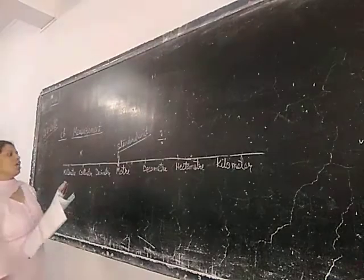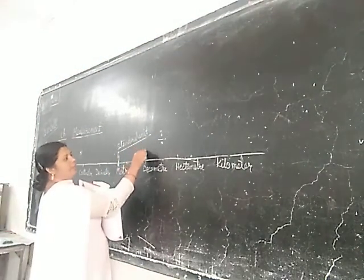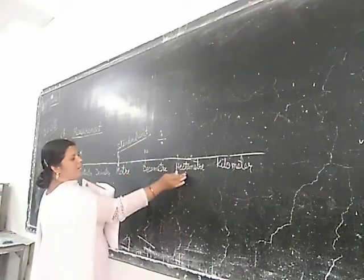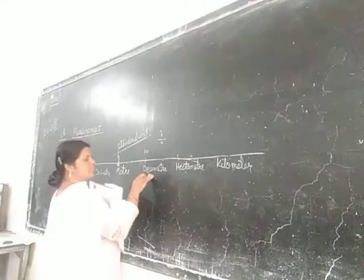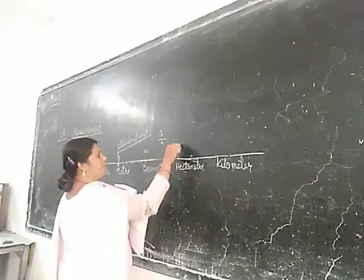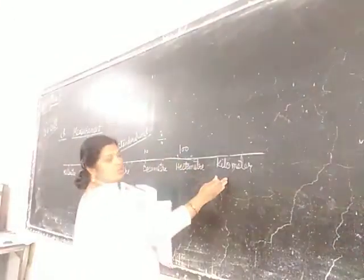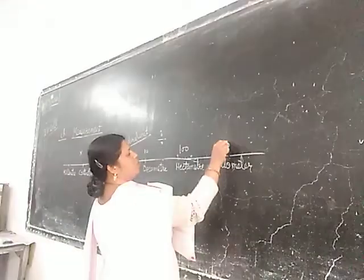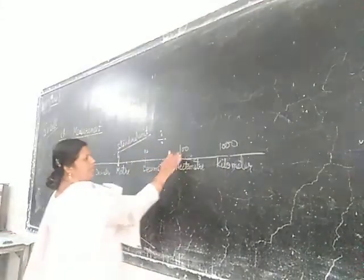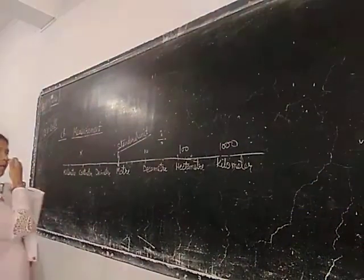Now, when we have to convert meter into decameter, we have to divide it by 10. Then, divided by hectometer means 100 because after that it is 10. 10 multiplied by hectometer means 100, and when we will go into kilometer, we will divide it by 1000 because 10, 10, 10. It means three zeros is coming from here.